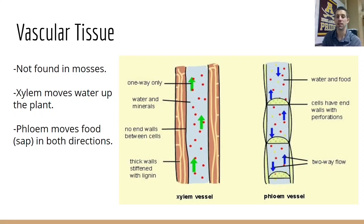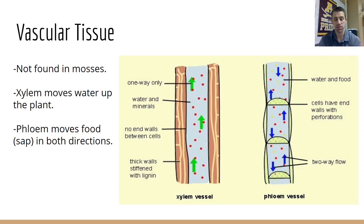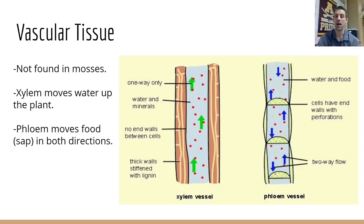Phloem is the method of transport for food, or really sap — sugary substances inside the plant. This is a two-way street. It can move substances created in the leaves through photosynthesis back down to the roots where they can be stored, and then back up from the roots through the stem into the leaves for regrowth. We take advantage of this specifically when we tap maple trees for their sap — we tap them in late February or early March, when they're just starting to regenerate their sap flow from their roots back up to regrow their leaves.